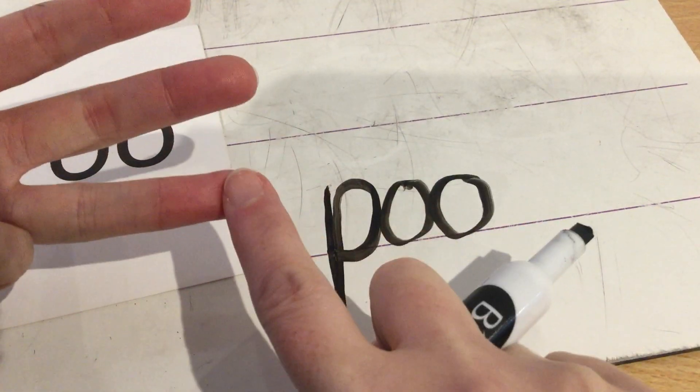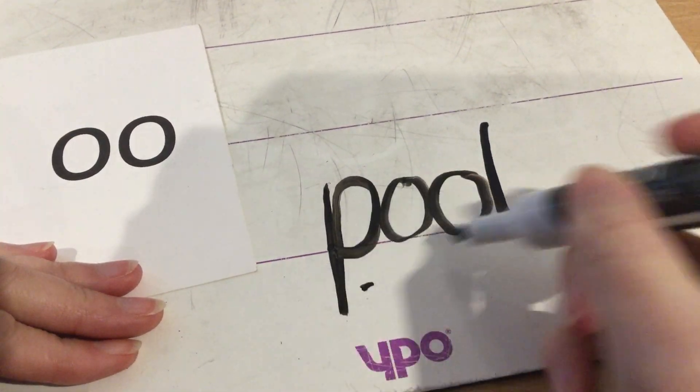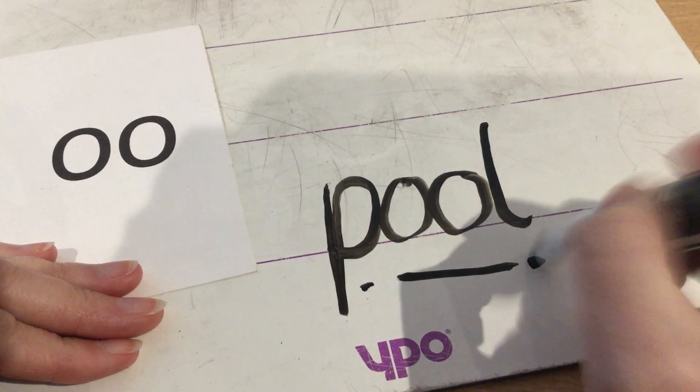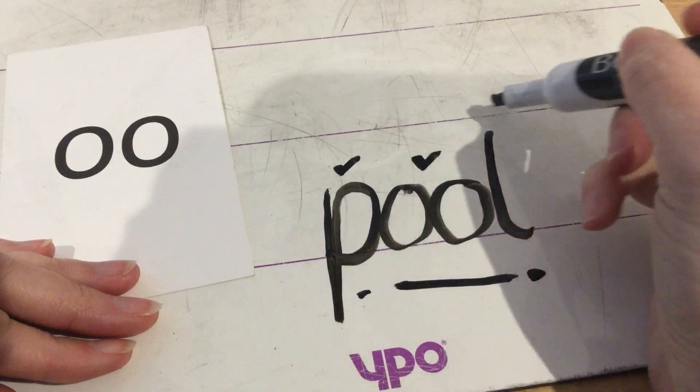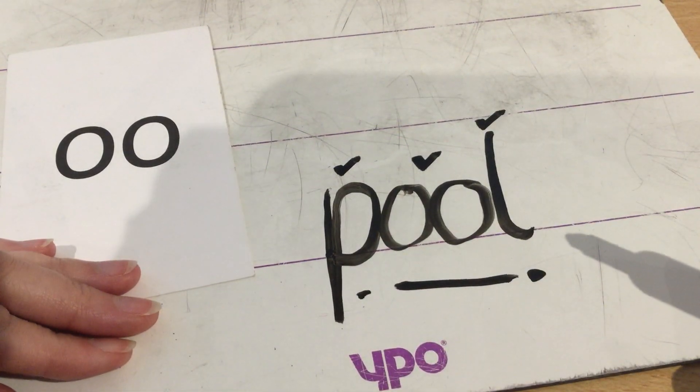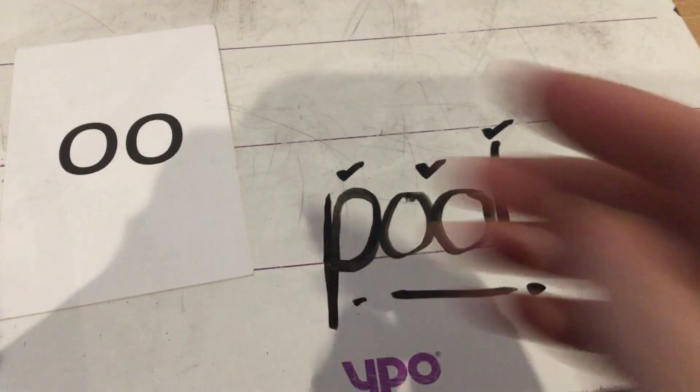P, oo, l, l, l, l. So we're going to add down that long leg at the end. P, oo, l, pool. Don't forget to give yourself a little tick for each of those sounds that you got right. Very well done.